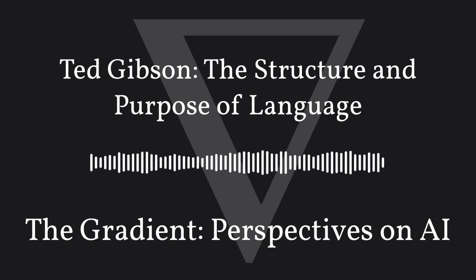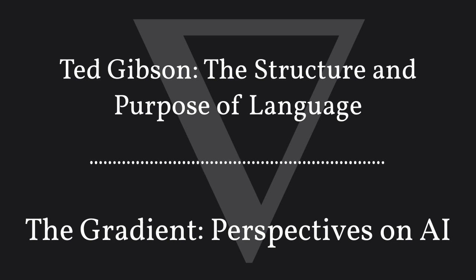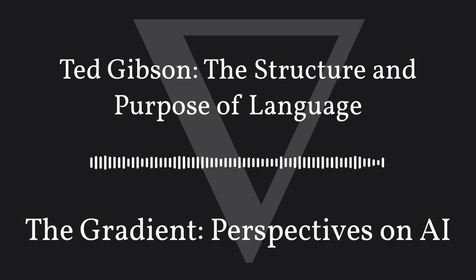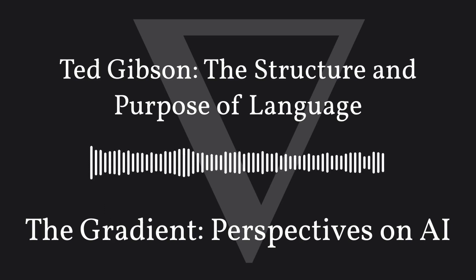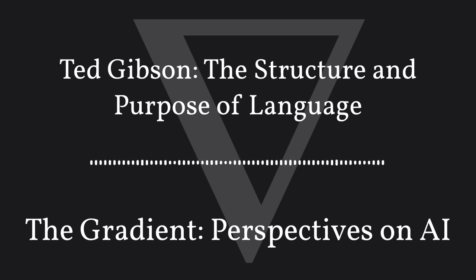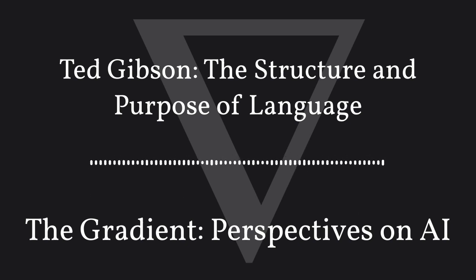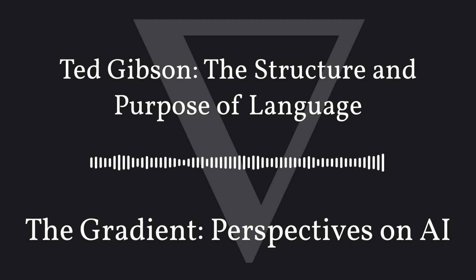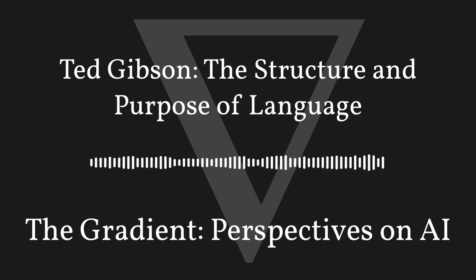Why did language develop to have the features we normally associate with it? Why is there grammatical structure or ambiguity? It's an understatement to say that language is of great interest in AI right now. I wanted to speak to somebody who studies language and how it develops in humans. Ted Gibson, who leads the Ted Lab at MIT, investigates why languages look the way they do, and many fascinating questions that fall under this umbrella.